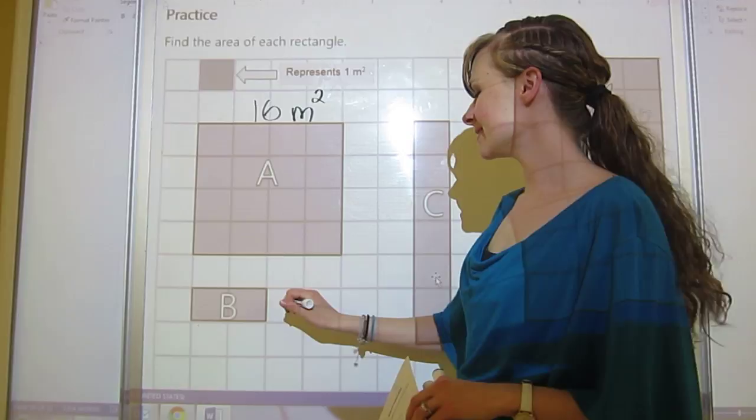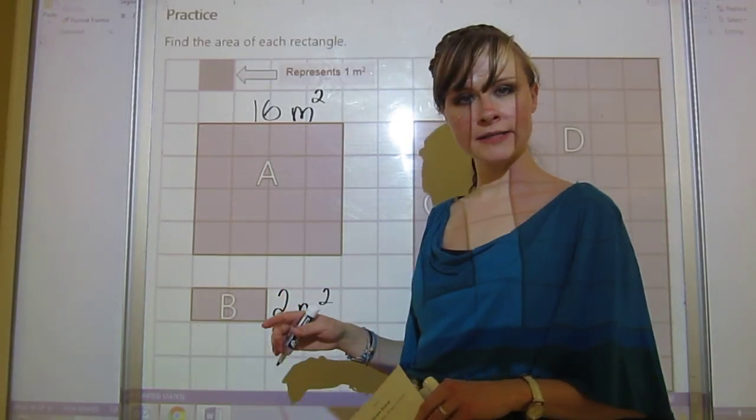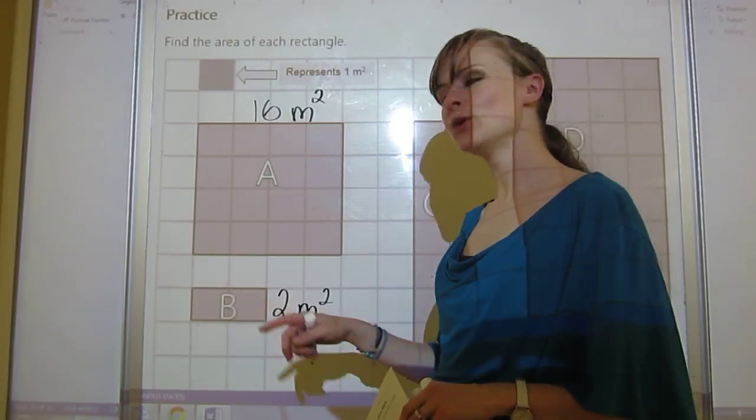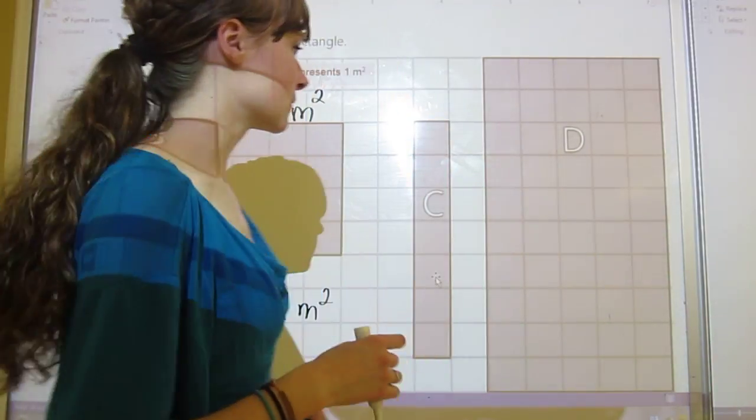B, I think that's the easiest one on this page, is 2 meters squared. This one, it would probably be easier to just count 1, 2, instead of going okay, it's 1, 2 across and there's only one row, so 1 times 2. That's extra work.